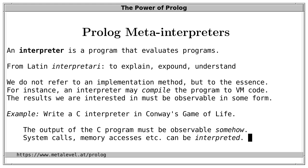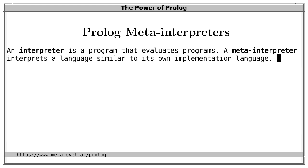We can emulate everything a C program could do — including writing an interpreter for C in Conway's Game of Life. A meta-interpreter is an interpreter that interprets a language which is similar or identical to its own implementation language. So a meta-interpreter for Conway's Game of Life would use Conway's Game of Life to express how Conway's Game of Life works, emulating the exact steps it would perform.